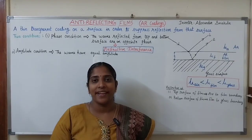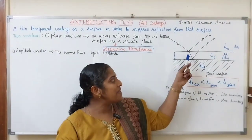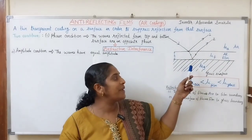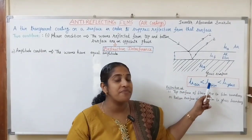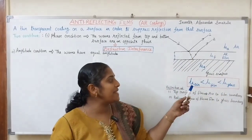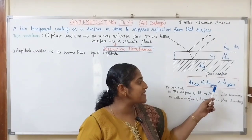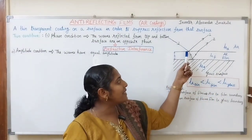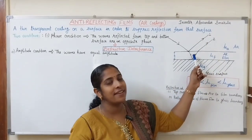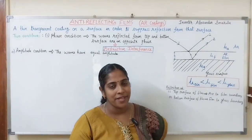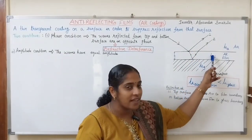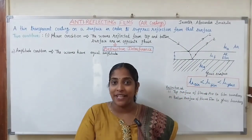Now we can see the theory behind anti-reflecting films. An AR film of refractive index μF is coated over a glass surface of refractive index μG, where the refractive index of the film is less than the refractive index of the glass surface. The outer environment is air, so μ_air < μ_film < μ_glass. When light is incident, a part is reflected from the top surface of the AR film, and a part is reflected from the bottom surface. These two reflected rays superimpose and produce interference.